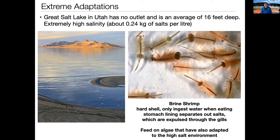Now we see adaptation in extreme environments. Before I moved to Chicago, I was a professor in Utah for about seven years. This is the Great Salt Lake, with Antelope Island there. The Great Salt Lake is one of the most saline bodies of water on the planet. On average it's only about 16 feet deep and has no outlet, so all the water that comes down concentrates in this little area. It has an extremely high salinity — if you take a liter of water and evaporate it, you're left with about a quarter of a kilogram of solids — about half a pound of salt dissolved in each liter.